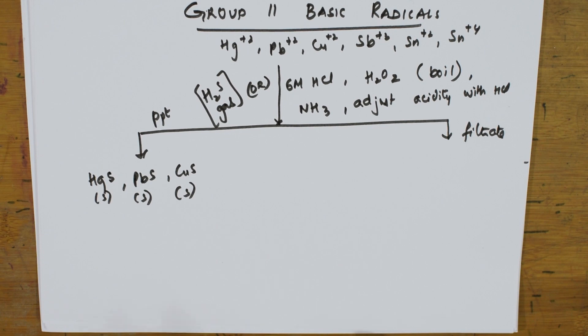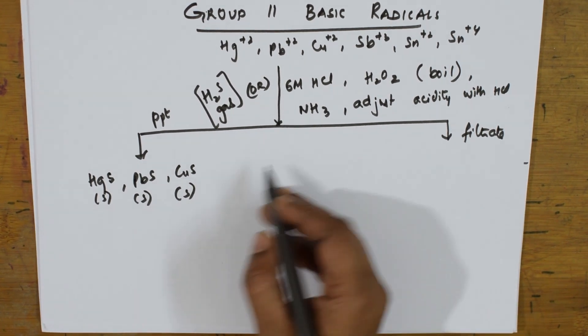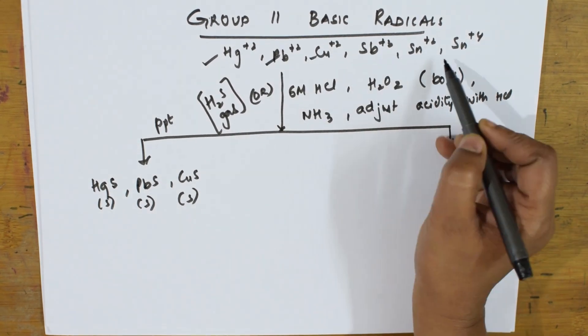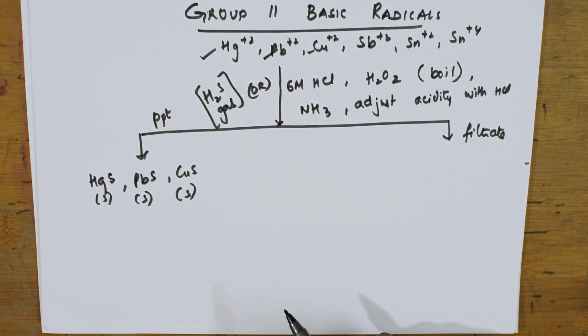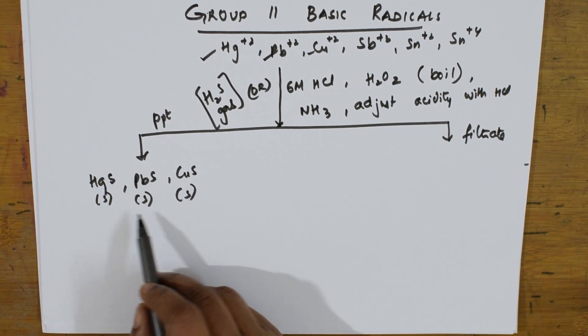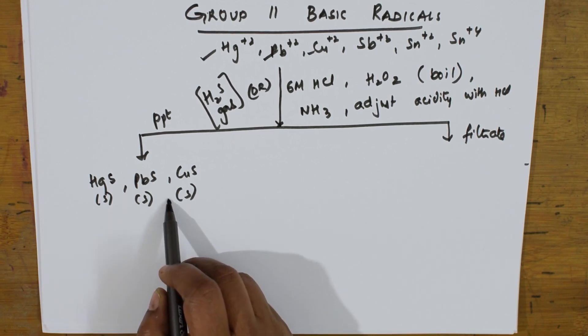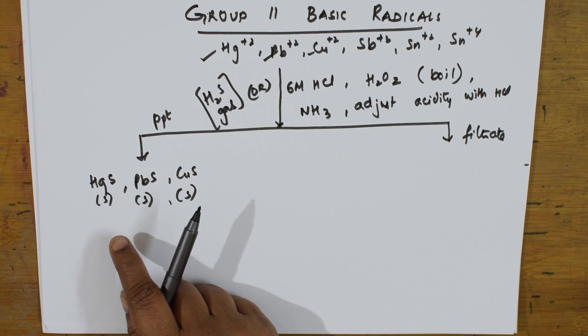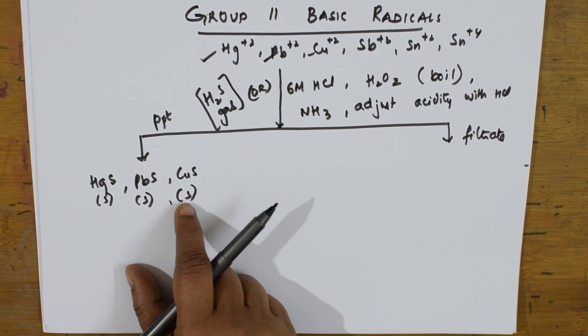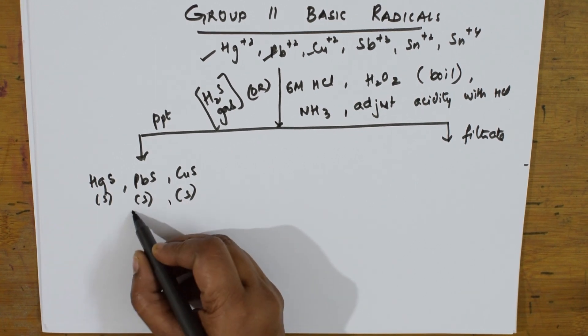Here, important, apart from this you have one more class also. See, mercury is over, lead is over, copper. We still have this. These salts, the sulfides of this particular cations, except HgS, these two PbS and CuS, they form black PPT.